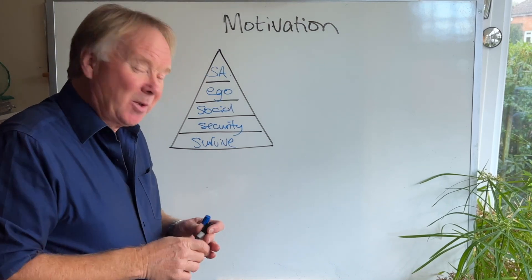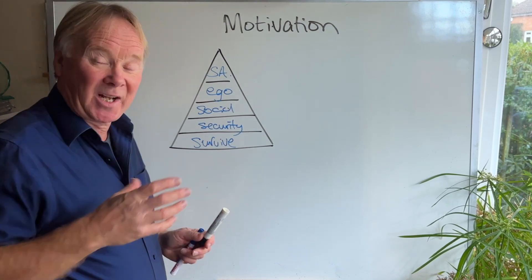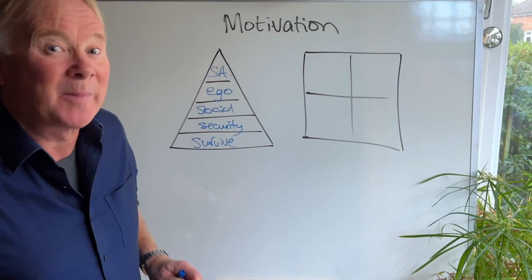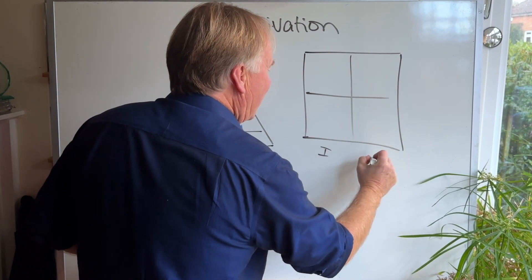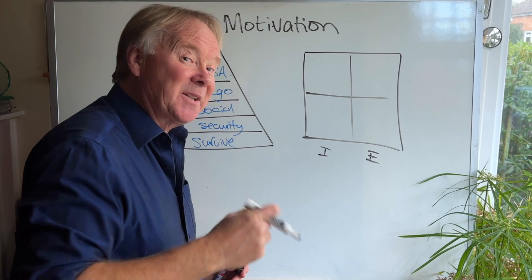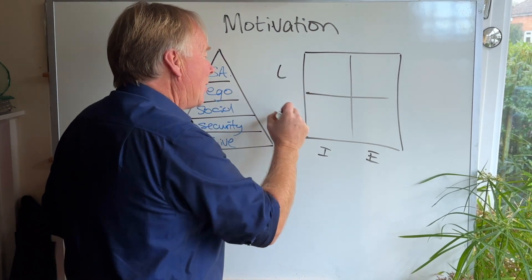Now, the second theory I want to show you says that actually people are different and that people have different things that drive them. And the idea of this is that you've got introvert people and extrovert people.